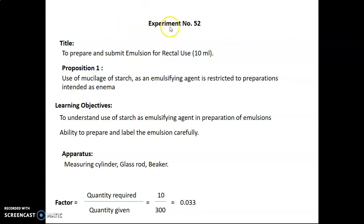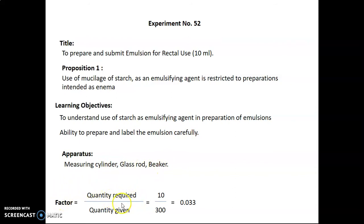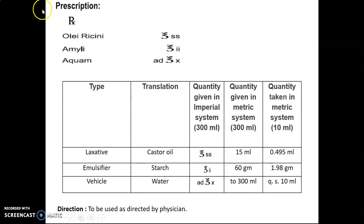Experiment 52: To prepare and submit an emulsion for rectal use, 10 ml. The use of miscellaneous starch as an emulsifying agent is restricted to preparations intended as enemas. Learning objectives are to understand the use of starch as an emulsifying agent and to prepare and label the emulsion carefully. Apparatus required: measuring cylinder, glass rod, beaker. Factor calculated: quantity required divided by quantity given equals 10 divided by 300, which equals 0.033.